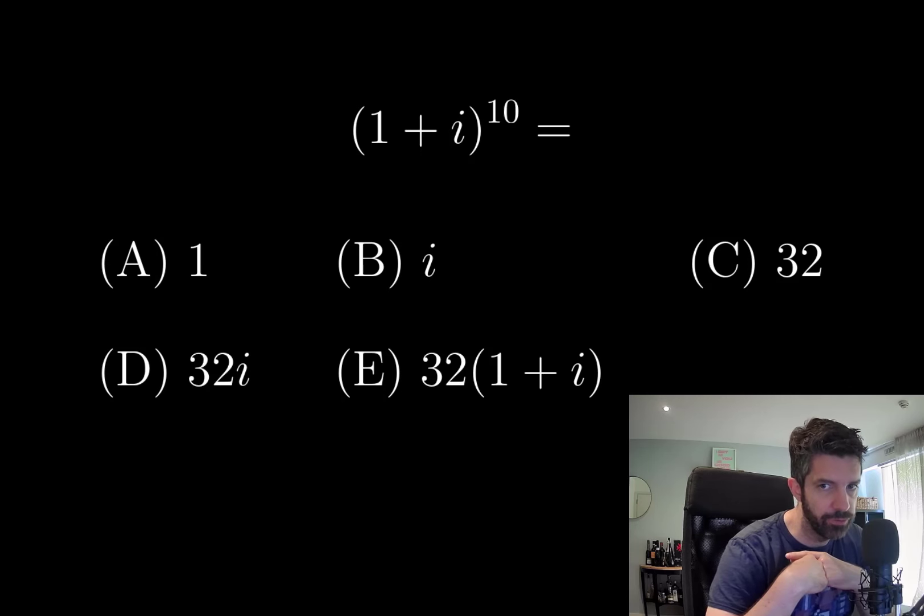And so the answer is clearly going to be either C or D. A and B have a modulus that's too small, E has a modulus that's too large.